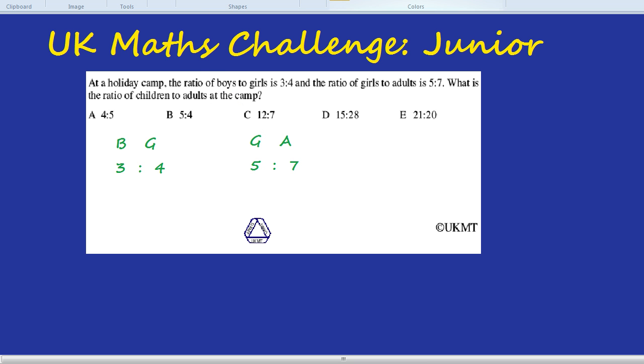Here we have 4 girls equals 3 boys. Here we have 5 girls equals 7 adults. If we could only pick some number that 4 and 5 both go into, then we'd be able to say well for this number of girls you get this number of boys. For that same number of girls you get this number of adults.